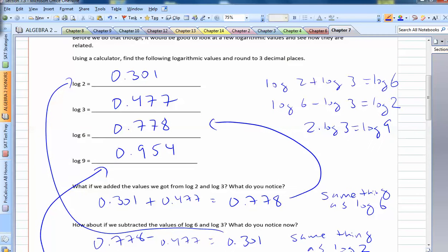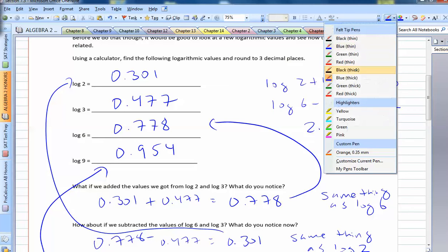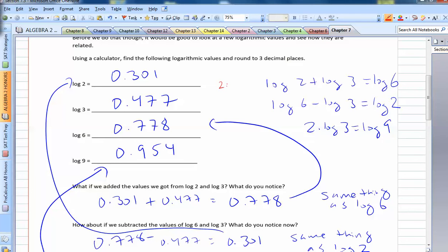So what does all this mean? Well, if we think about it, we know that 2 times 3 equals 6. We know 6 divided by 3 equals 2. And we know that 3 squared equals 9. So what I could do is I could actually condense these two guys and come up with a property for logs.